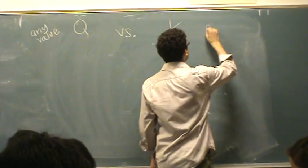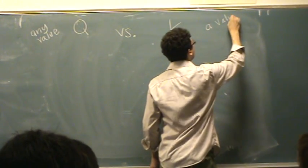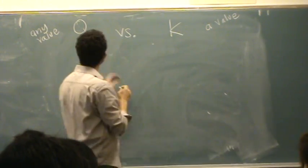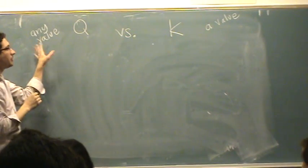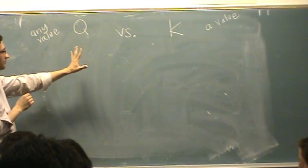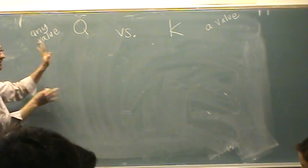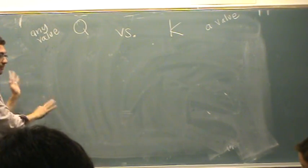K is not any value, it's a value for a given reaction. This is any value for a given reaction. When Q equals K, it happens to be equilibrium. But Q can be smaller than K, bigger than K, and that tells you which way it shifts. Vaguely remember that concept?